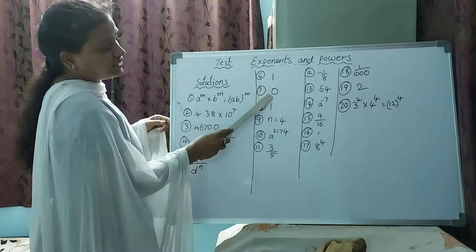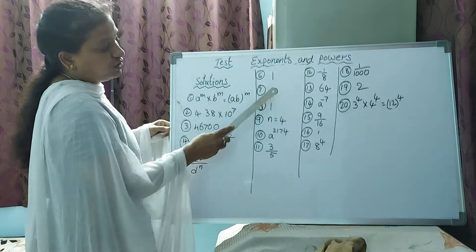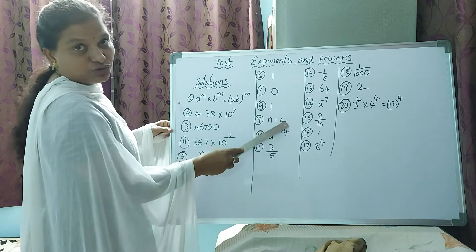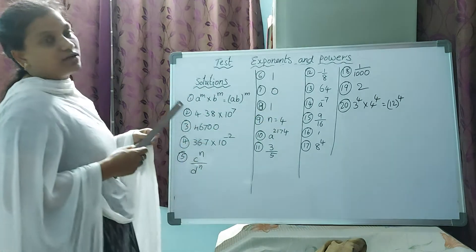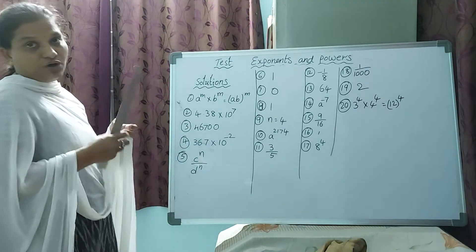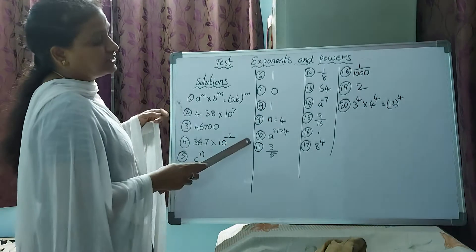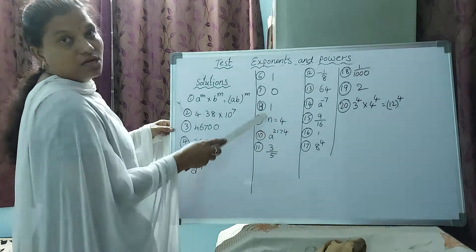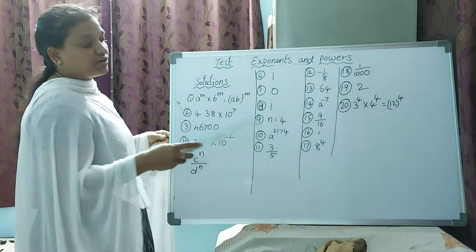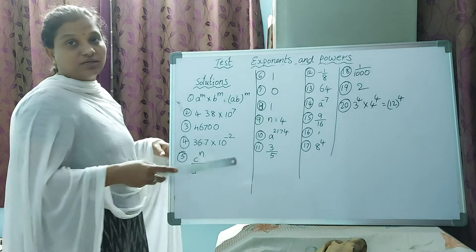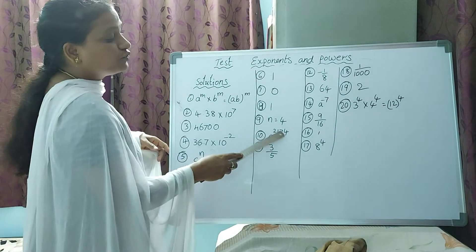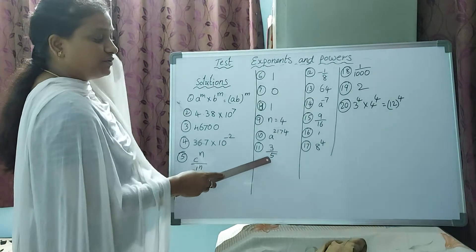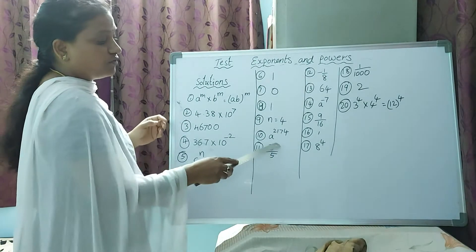For the sixth one, anything to the power zero equals one. The seventh one: zero. The eighth one: one. The ninth one: n equals four — you apply the formula. Then a × a × a × a, four times, means a to the power of 2174.